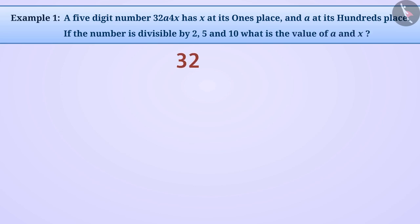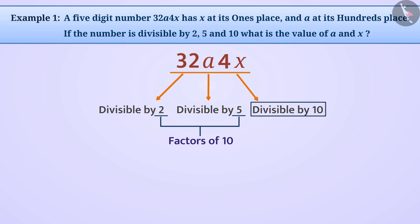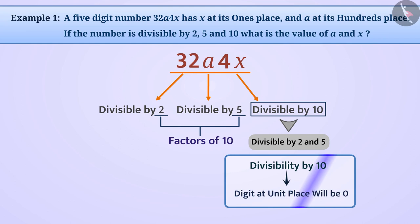We are given that 3 2 a 4 x is divisible by two, five, and ten. Since both two and five are factors of ten, any number which is divisible by ten will also be divisible by two and five. So here we can find the answer by using the rule for divisibility by ten only.